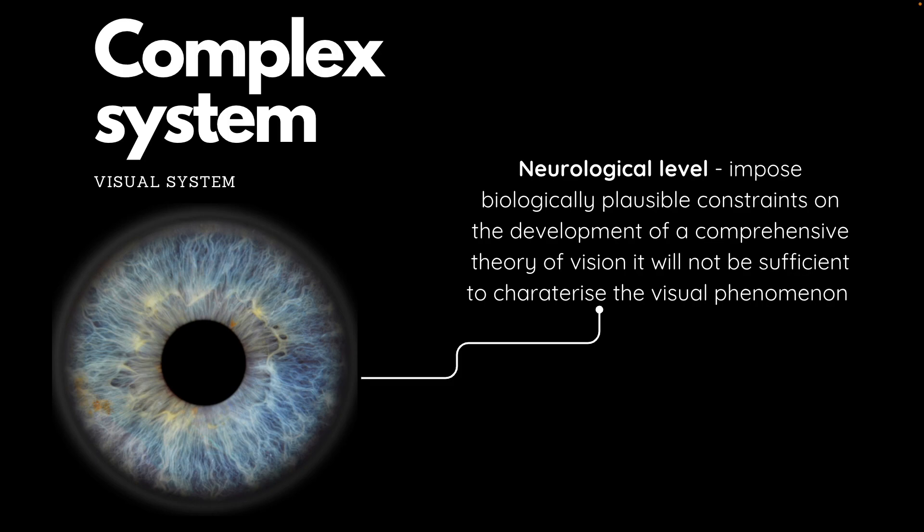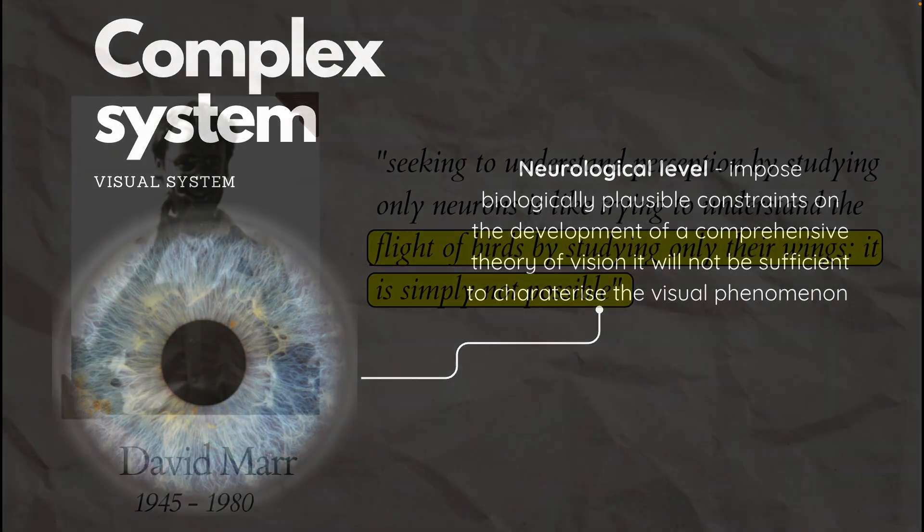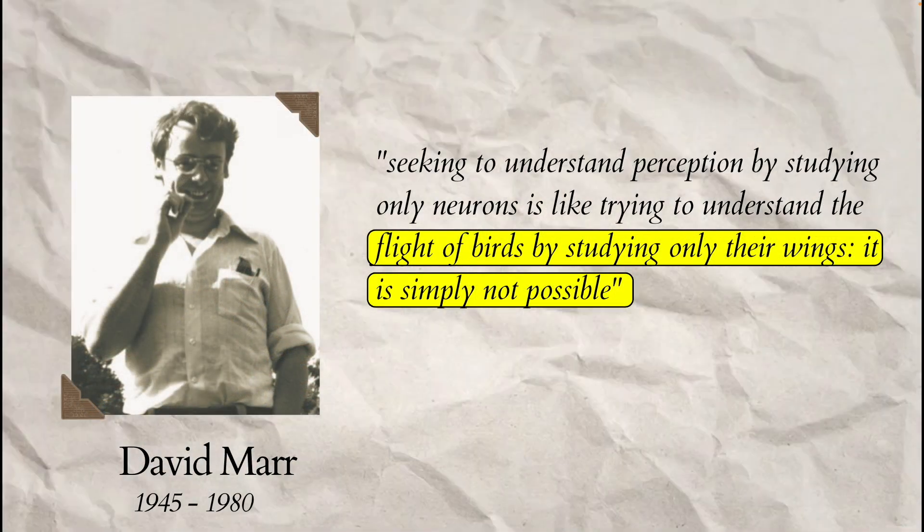In explaining this problem, he stated that seeking to understand perception by studying only neurons is like trying to understand the flight of birds by studying only their wings. It is simply not possible.